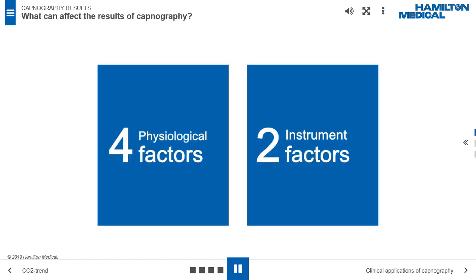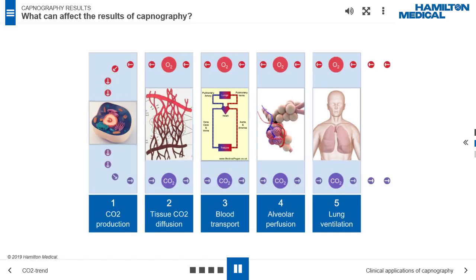What can affect the results of capnography? Capnographic results are influenced by six factors in two categories, physiological factors and equipment factors. Physiological factors include factors that influence cellular metabolism and CO2 production, such as fever, factors that influence CO2 transport, such as cardiac output and pulmonary perfusion.